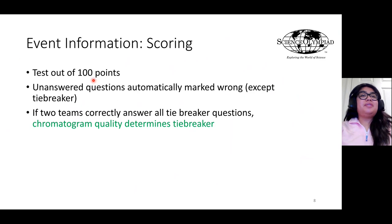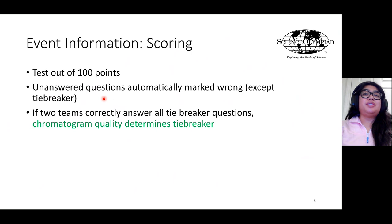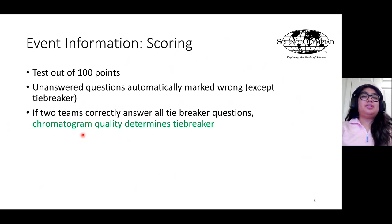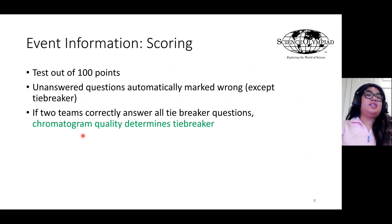The test will be out of 100 points, and unanswered questions will be automatically marked wrong, except for the tiebreaker questions. If two teams correctly answer all tiebreaker questions and are still tied in points, their chromatogram quality will determine the tiebreaker.